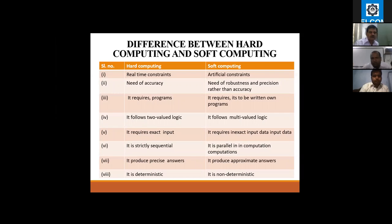Some basic differences between soft computing and hard computing: hard computing is real-time constant, soft computing is artificial constant. There is need of accuracy versus need of robustness. It requires programs versus written programs. It follows two-valued logic versus multi-valued logics. It requires exact input data versus inexact input data. It is strictly sequential, but in soft computing it is parallel and competitive. It produces precise answers versus approximate answers. The main difference: it is deterministic versus non-deterministic.